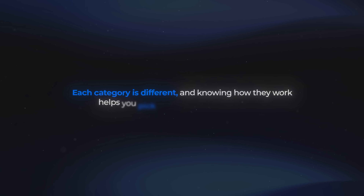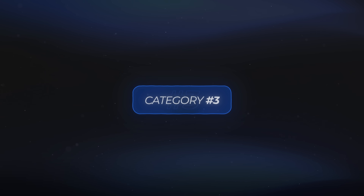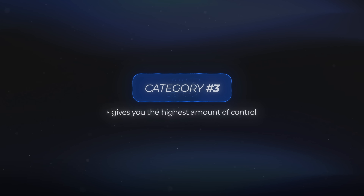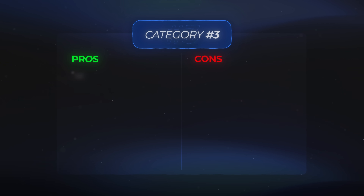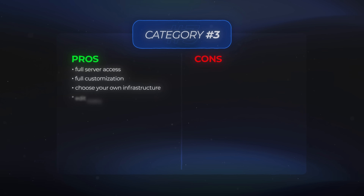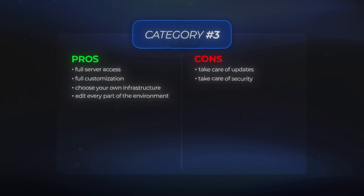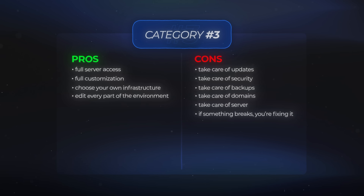Each category is different, and knowing how they work helps you pick the one that fits you best. Let's go through the pros and cons of each option, starting with the most advanced — category three. This category gives you the highest amount of control. The pros are full server access, full customization, the ability to choose your own infrastructure, and the freedom to edit every single part of your NA10 environment. This approach scales with you easily, but the cons are also very real: you'll be responsible for updates, security, backups, domains, and keeping the server in good shape. And if something breaks, you're the one fixing it.